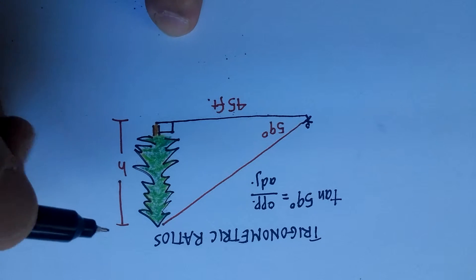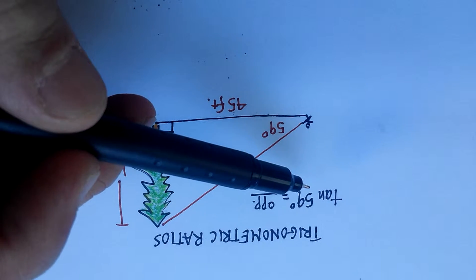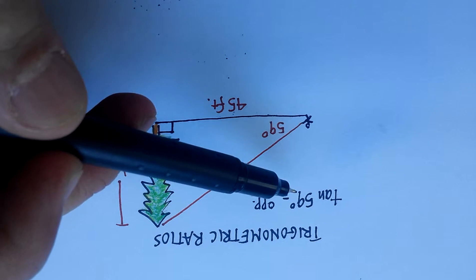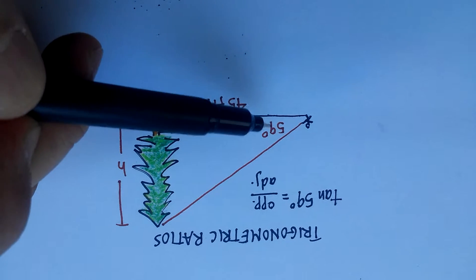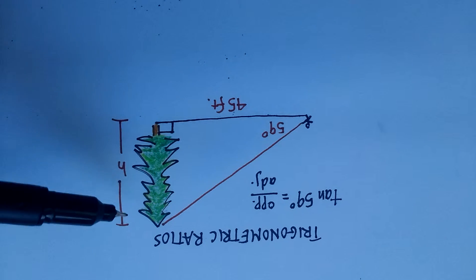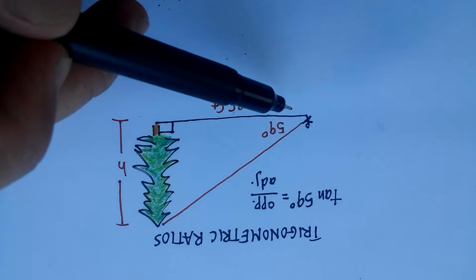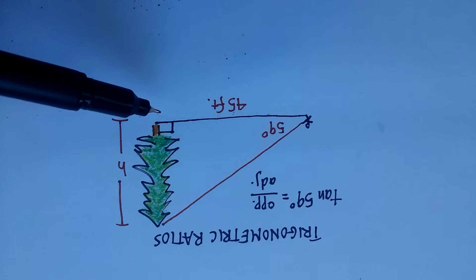Which ratio could we use? Probably the one that comes to mind fastest is the tangent. Remember that the tangent of any angle, in this case 59, is equal to the opposite side over the adjacent side, which we know to be 45 feet.